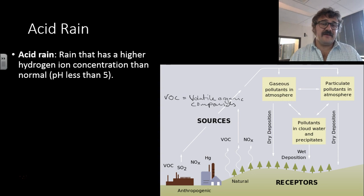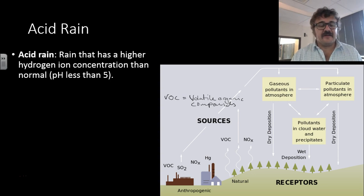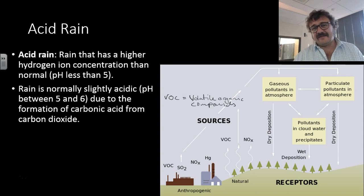So acid rain is basically rain with a pH of less than 5, or a higher concentration of hydrogen ions or hydronium ions than normal. Generally rain is slightly acidic because it has carbon dioxide in the atmosphere. Carbon dioxide produces carbonic acid, so it tends to be slightly acidic anyway.